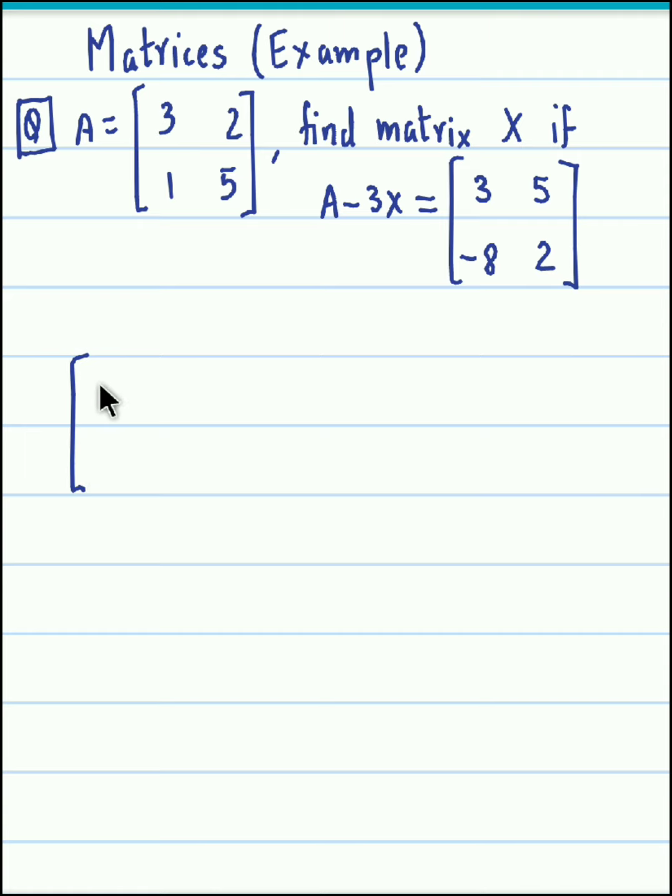So here again we replace this A by the given matrix. So we obtain the matrix 3, 2, 1, 5, so this is matrix A over here, minus 3X is equal to on the right hand side we have the matrix 3, 5, minus 8, 2.